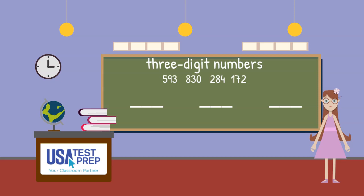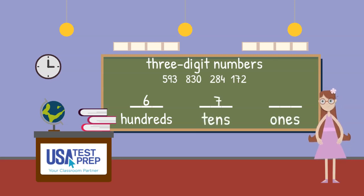Each number has a hundreds digit, each number has a tens digit, and each number has a ones digit.